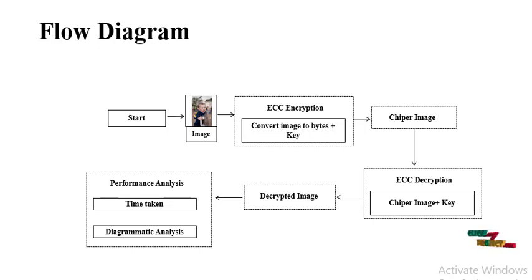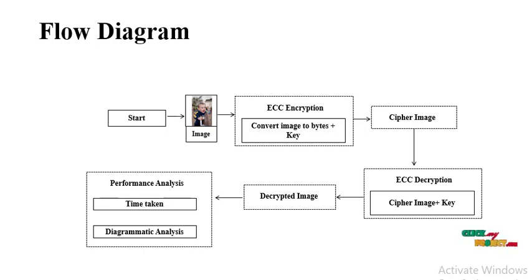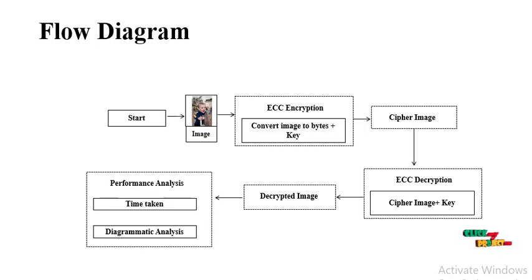After encryption, the encrypted image is called the cipher image. The cipher image is given as input to the decryption stage, where the cipher image plus the key are combined to produce the decrypted original image. We then analyze performance using the time taken for encryption and decryption, as well as histogram comparisons of the original and encrypted images.